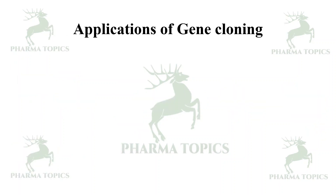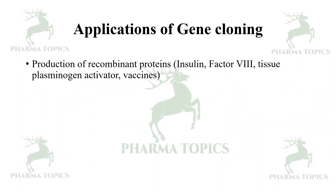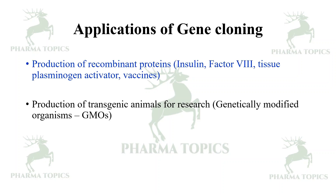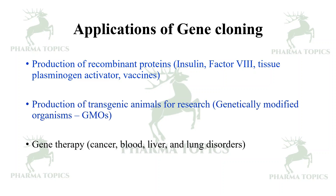Applications of gene cloning include: production of recombinant proteins such as insulin, Factor VIII, and tissue plasminogen activator; vaccine production; production of transgenic animals for research; genetically modified organisms; and gene therapy for cancer, blood disorders, liver disorders, and lung disorders.